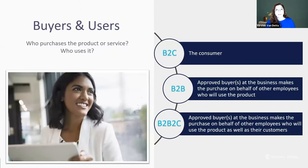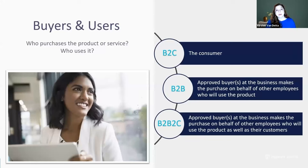The second difference is buyers and users. In B2C, your buyer and your user are generally the same — I bought a pack of gum, I ate the gum. In B2B, you usually have approved buyers with funding approval, influencers, and decision makers signing contracts to buy products for other users at the company. In the B2B to C space, they're still buying for the business, but also buying a product that has a UI for their customers.